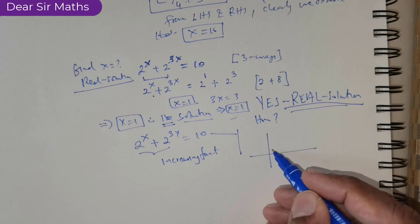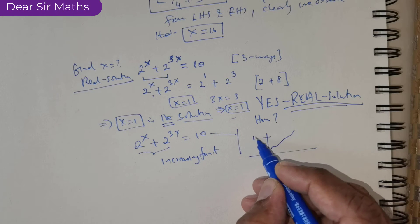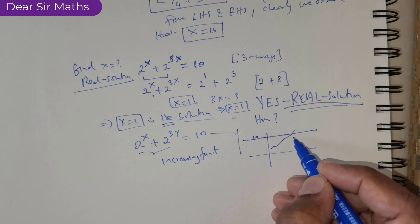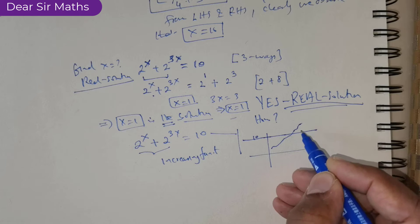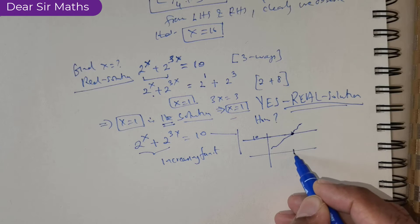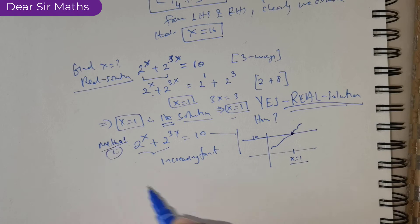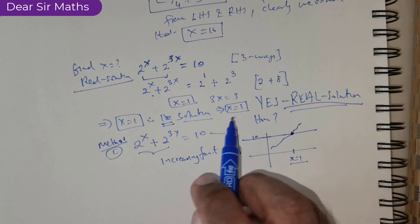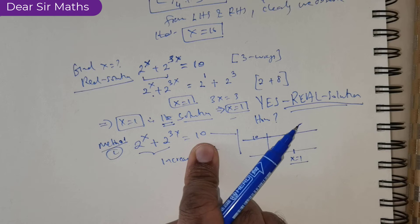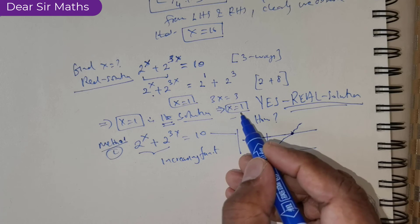For illustration, imagine a function moving up — this is an increasing function — and you have a constant function. The only possibility for the increasing function to intersect the constant is at just one point, and that point is found to be x equal to 1. So this is Method 2 — a justification using the concept of increasing function versus constant function as to why x equal to 1 is the only solution.